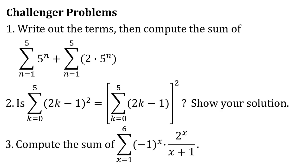We also have challenger problems. Number 1: write out the terms and compute the sum of [the sum of 5^n from n=1 to 5] plus [2 times the sum of 5^n from n=1 to 5]. Number 2: Is the sum of (2k−1)² as k goes from 0 to 5 equal to the square of the sum of (2k−1) as k goes from 0 to 5? Show your proof. Number 3: Compute the sum of (−1)^x × 2^x / (x+1) as x goes from 1 to 6.